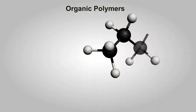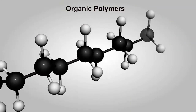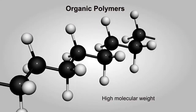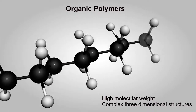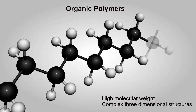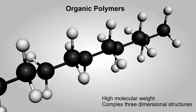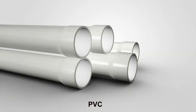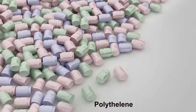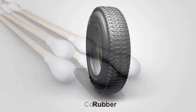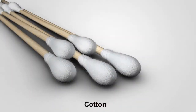Organic polymers are carbon compounds which have high molecular weight and complex three-dimensional structures due to long molecular chains. Examples are PVC, polyethylene, rubber, and cotton. Thank you.